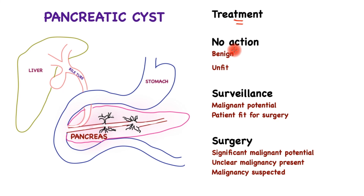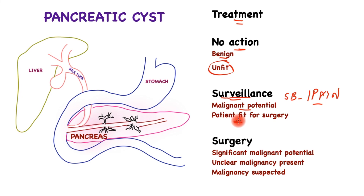In terms of treatment of pancreatic cysts, the great majority will lead to no action once diagnosed as benign, or if the patient is completely unfit for surgical intervention. A group of patients will undergo surveillance — regular scans at intervals to see how the cyst changes. These cysts typically have malignant potential, such as side branch IPMN, and the patient must be fit for surgery if surveillance is to be undertaken long term. Finally, surgery involves removal of part of the pancreas if there is significant malignant potential at presentation, if it is unclear whether malignancy is already present, or if the cysts are truly malignant — in which case surgical removal should be undertaken in a fit patient.